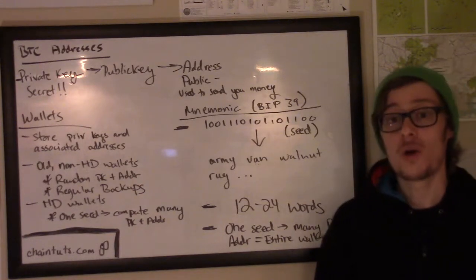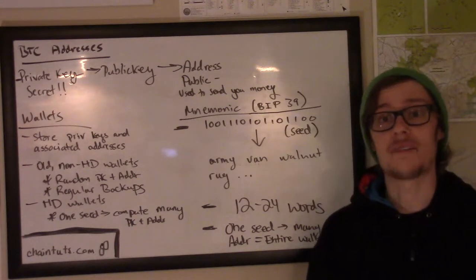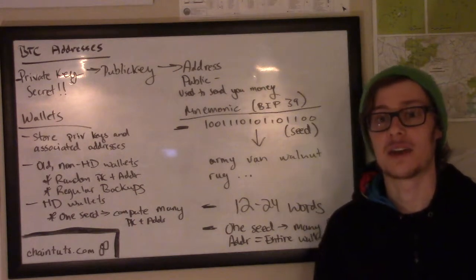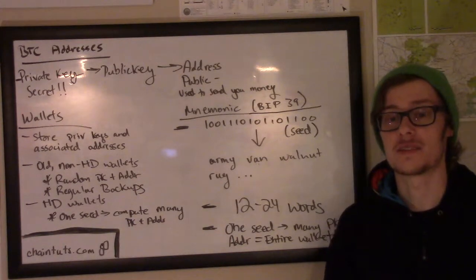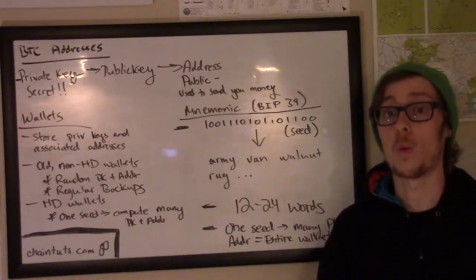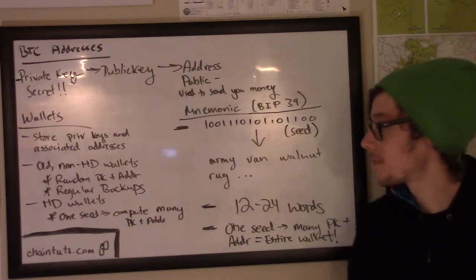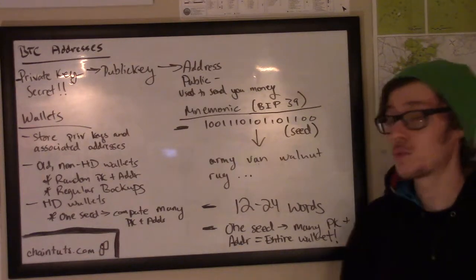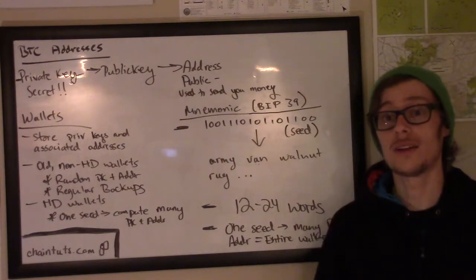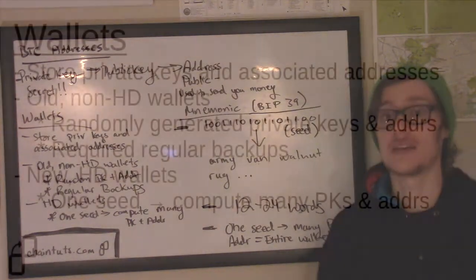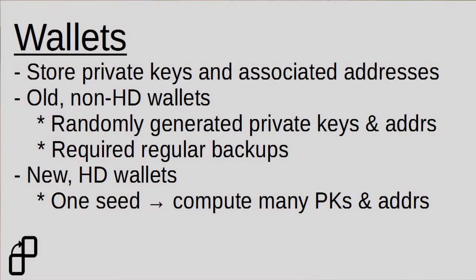We store all of these private keys and addresses in something we call a wallet. This wallet stores all of your private keys and all of your associated addresses that are derived from those private keys.